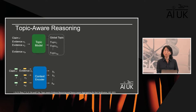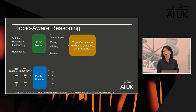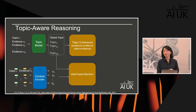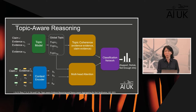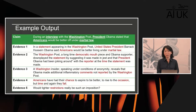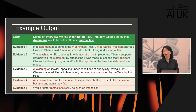We feed the claim and all retrieved evidence into a topic model to infer the global topic shared by the claim and evidence, as well as topics from individual pieces. We then perform topic coherence measurement to ensure evidence is topically coherent with the claim and that relevant evidence shares topical coherence with each other. We incorporate a topic attention score to generate the final representation, fed into a classification network. In our example, the top two pieces of evidence are topically relevant while the last two are irrelevant, and the third is ambiguous.